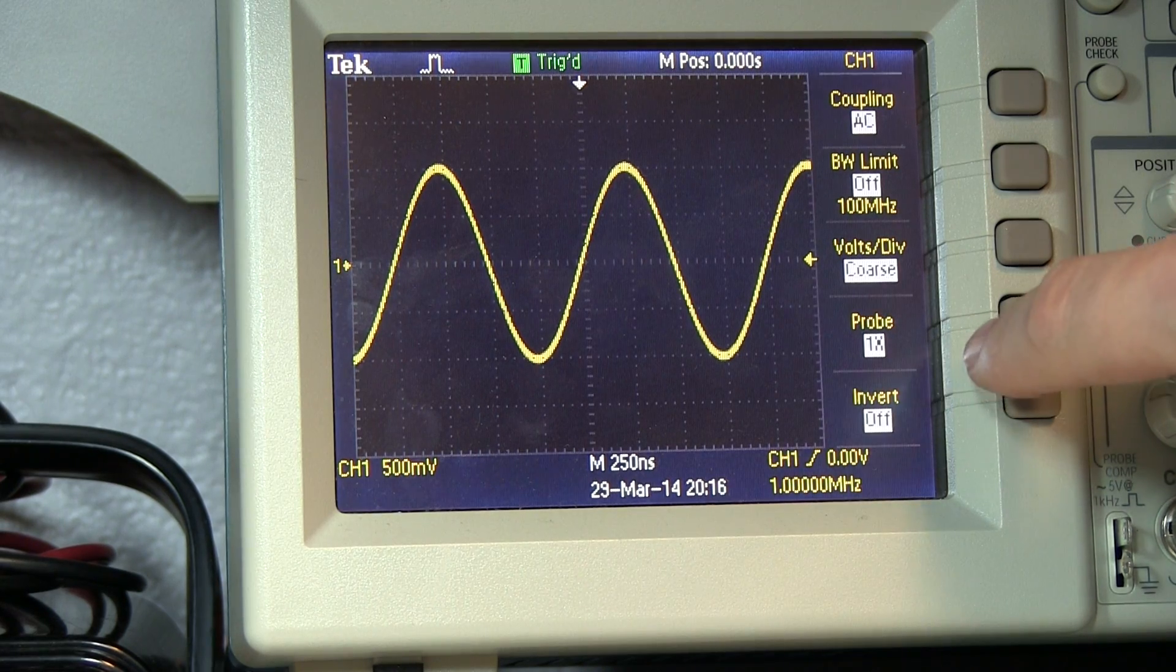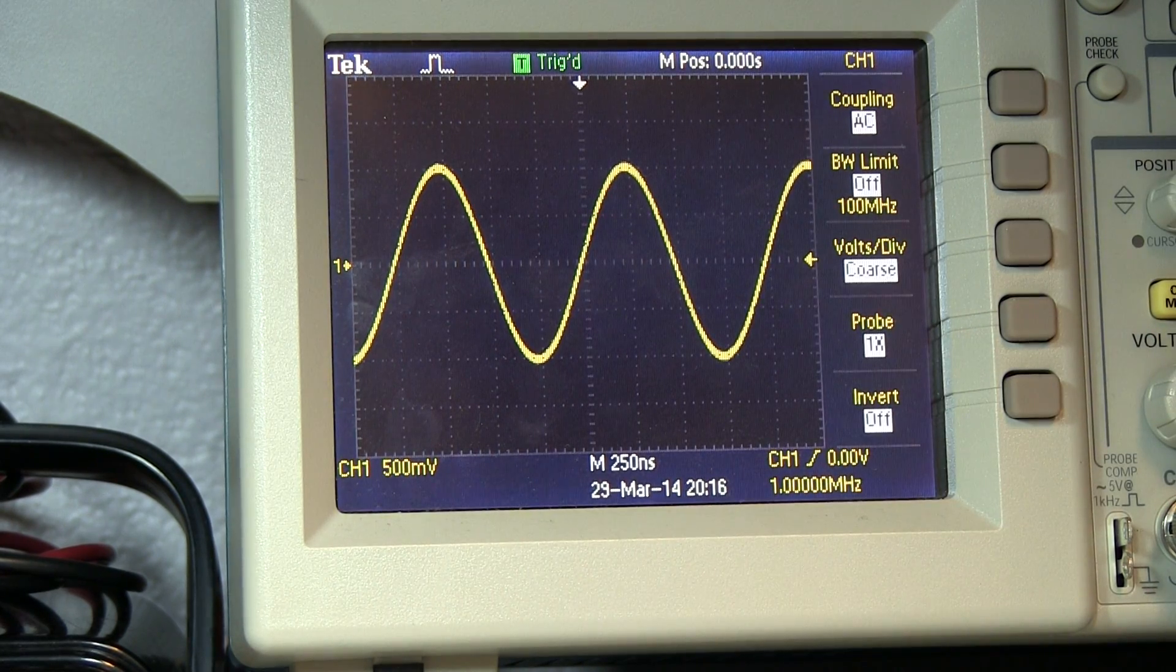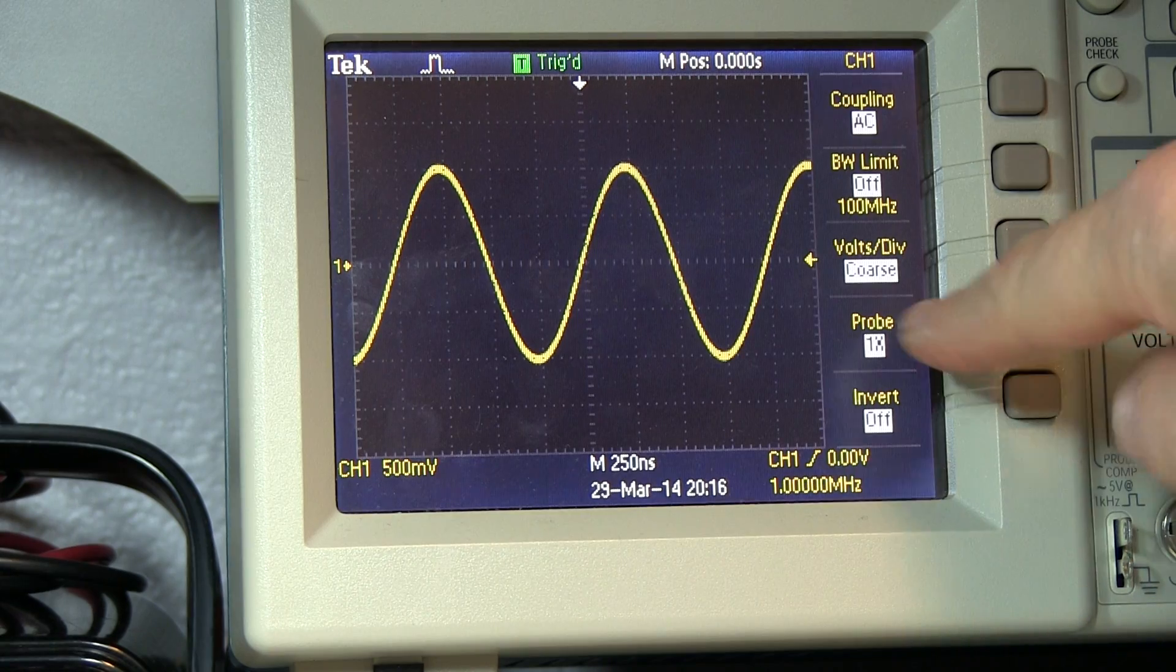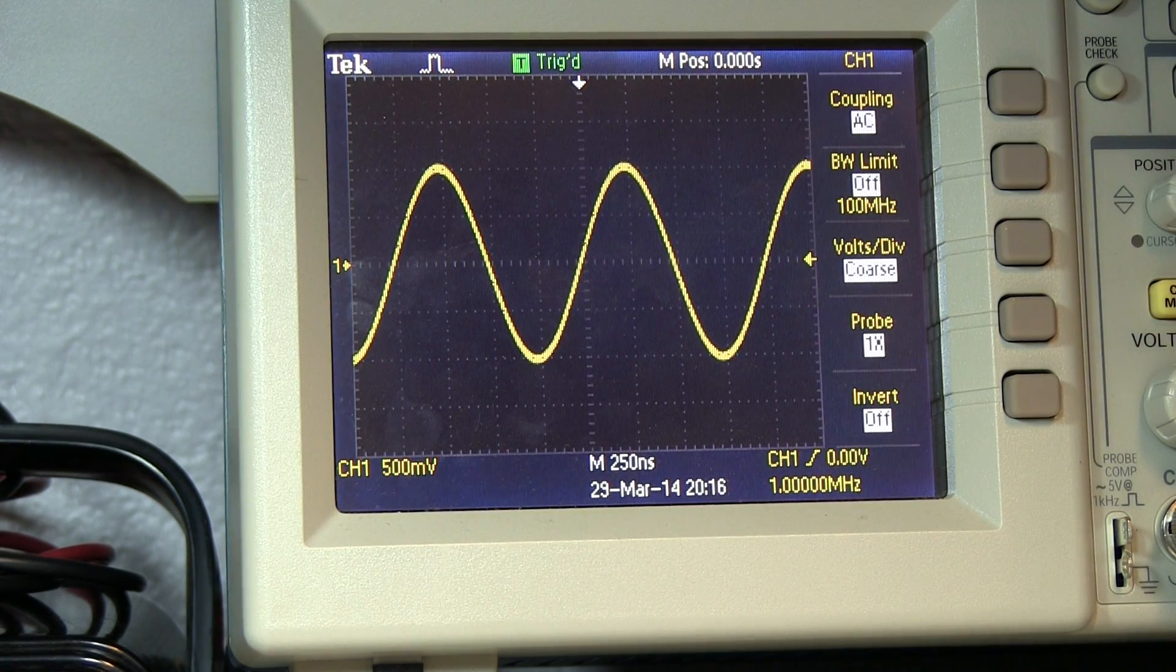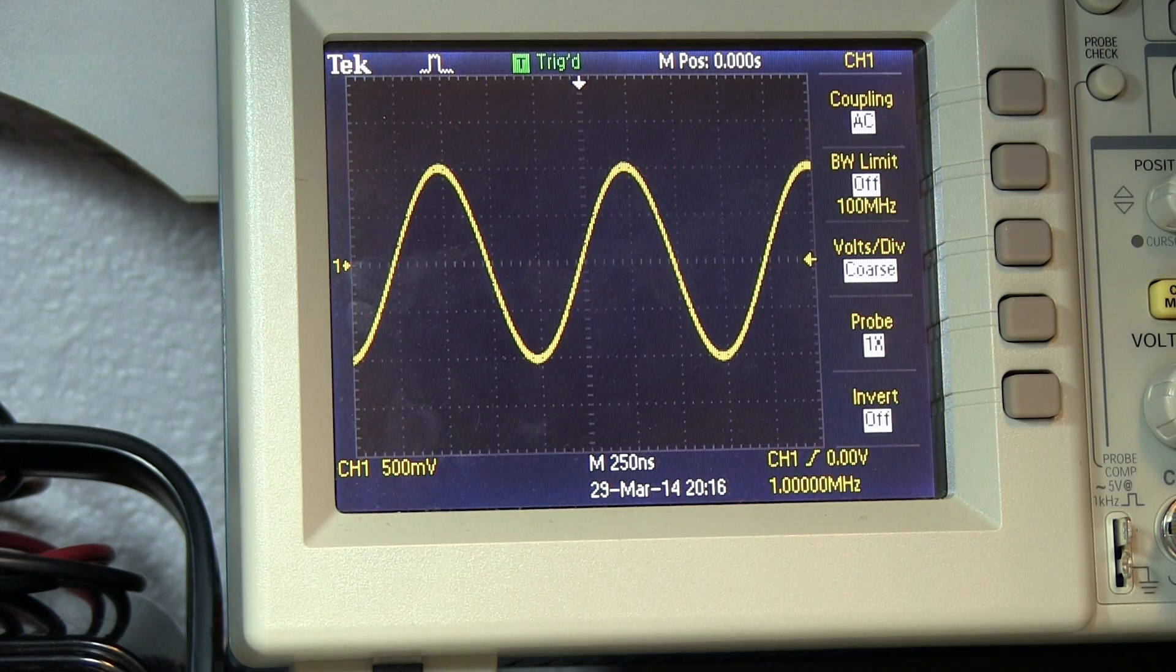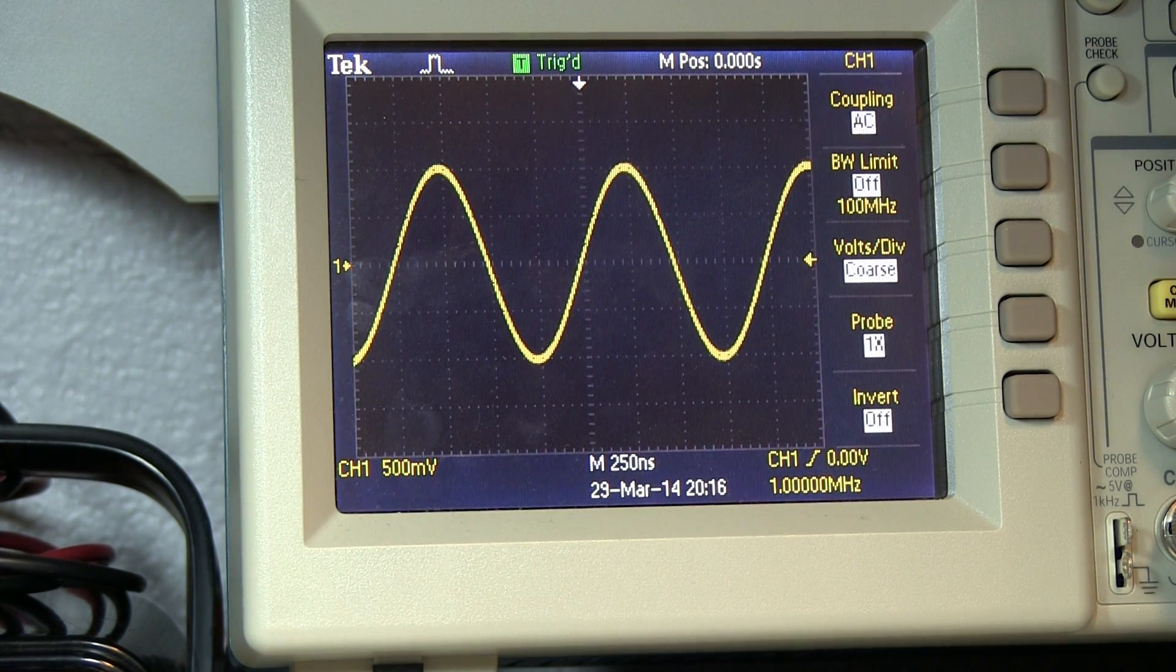Some scopes will automatically detect a probe, this one won't, so you've got to make sure that's right. And that's the most common reason why the amplitude would be off, if you're off by a factor of 10 or 100.